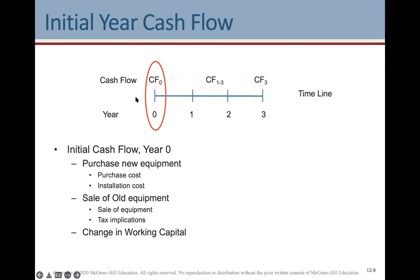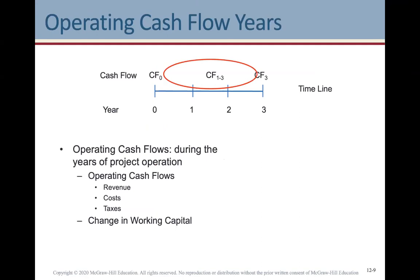A big consideration with these calculations is getting the timing of cash flows correct. The present is always time zero; one would be a year from now, two would be two years, and so on. You'll often have an initial cash flow in year zero — often cash going out for equipment, purchasing new equipment, or installing it. Sometimes you'll get cash flow from the sale of old equipment, and there are tax implications on that. There are also changes in working capital to consider.